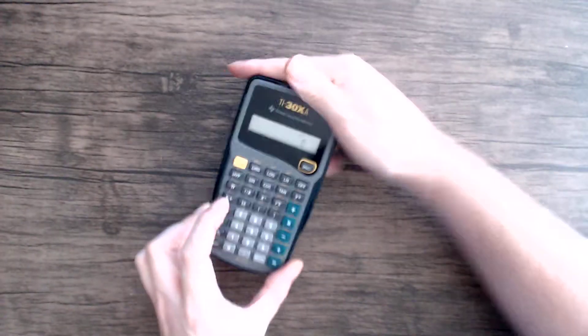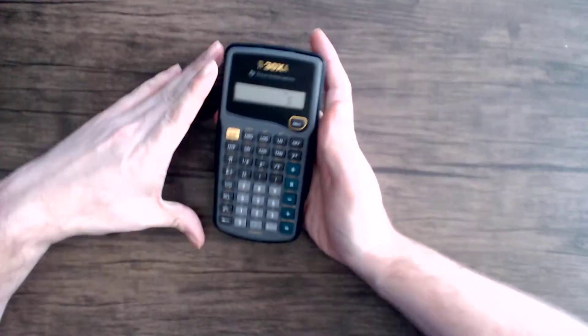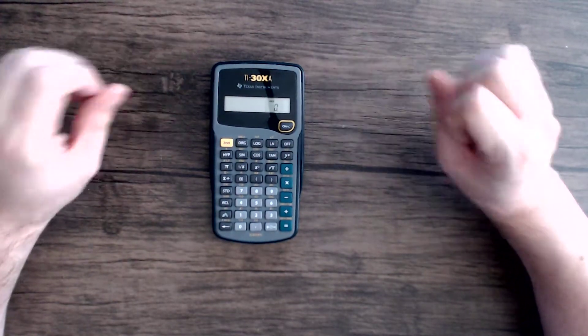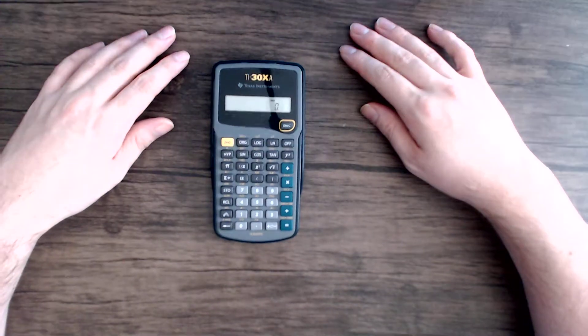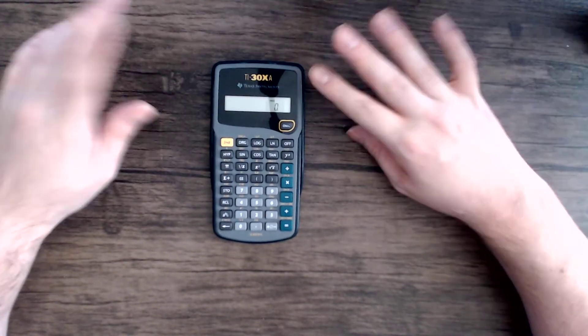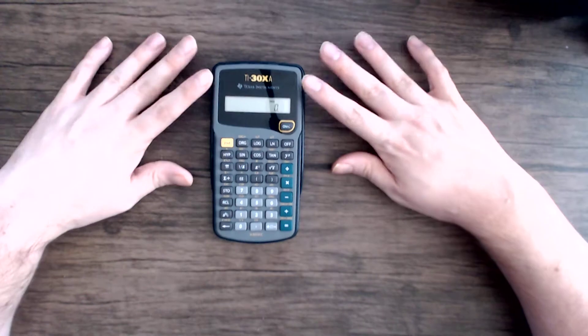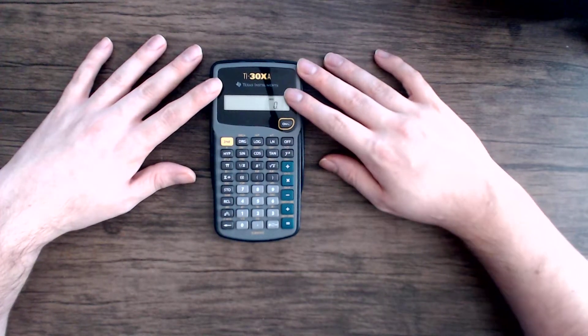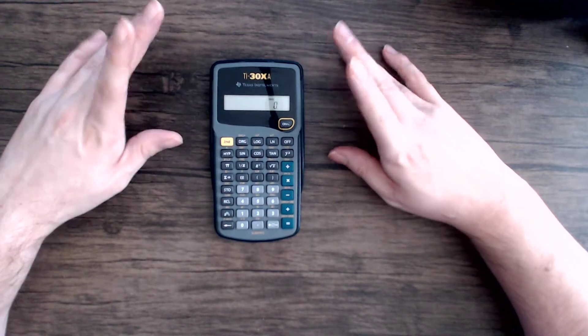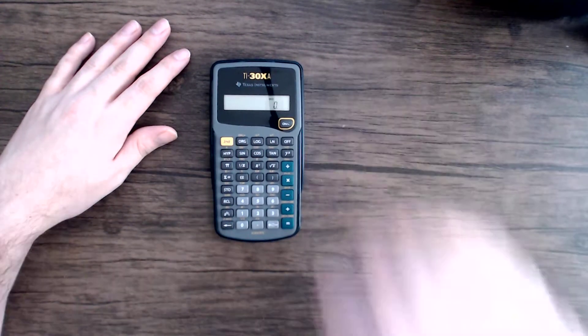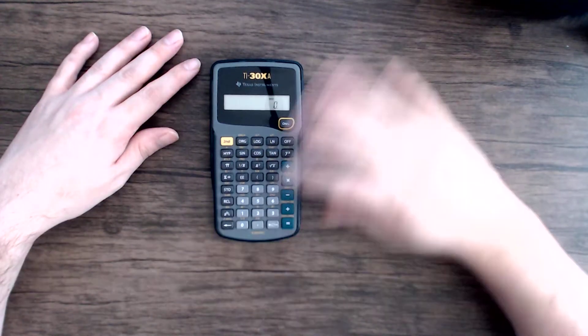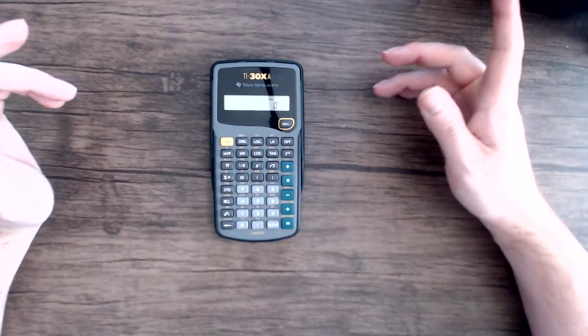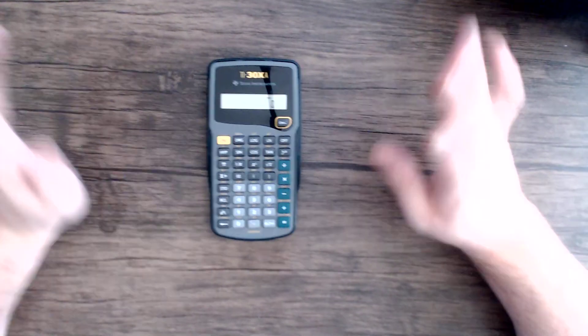This is the TI-30XA. Now this one is a calculator I hear mentioned all the time. People send me pictures of their TI-30 calculators. There's a lot of different versions of this one. In fact, there's a lot of different versions of the TI-30XA. There's five or six different revisions of it, and that's not counting the Solar version, or the TI-30X, or the TI-30X2. There's just so many of them.